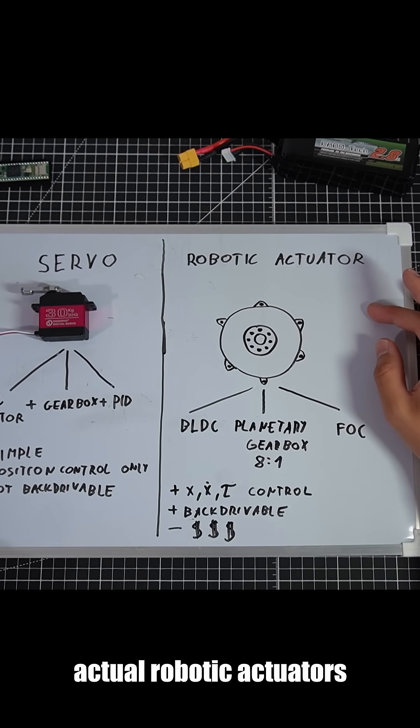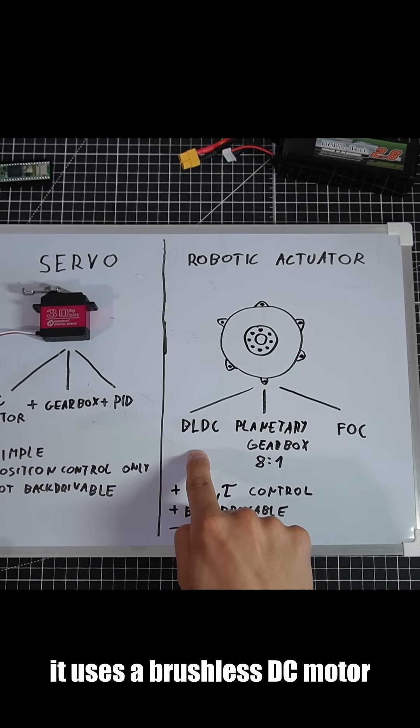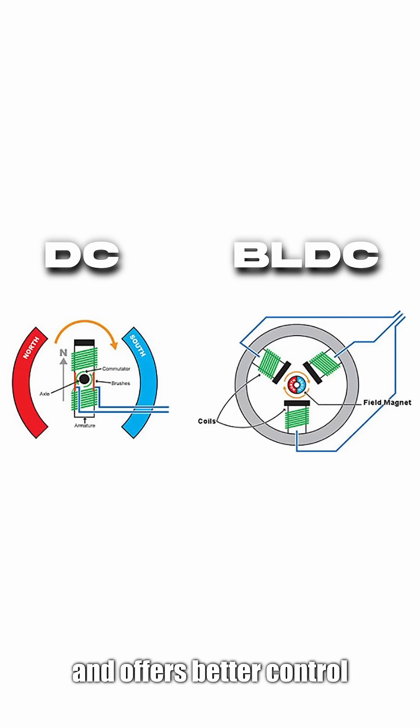Now let's look at actual robotic actuators. It's a brushless DC motor. It lasts longer, it's more efficient, and it offers better control.